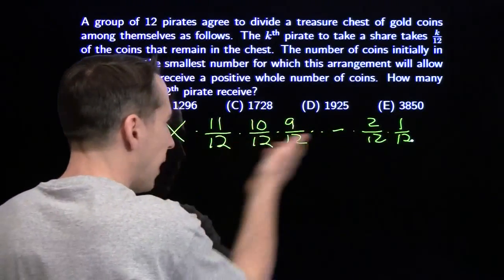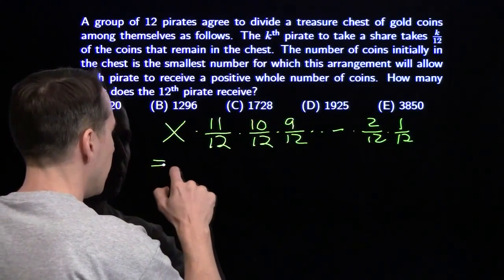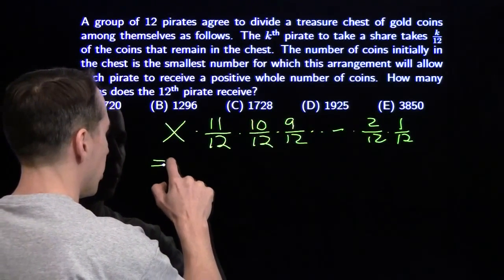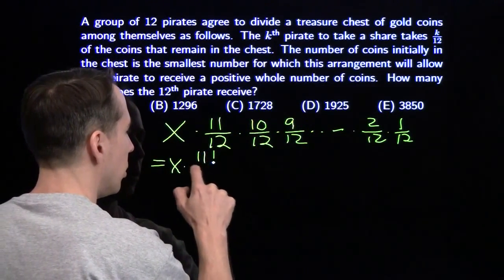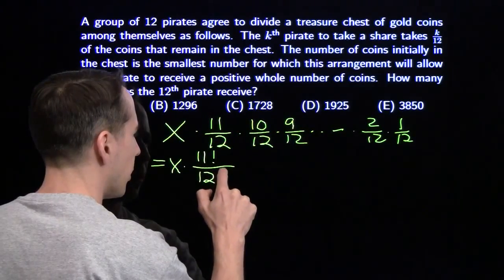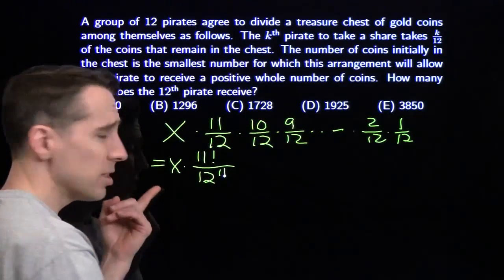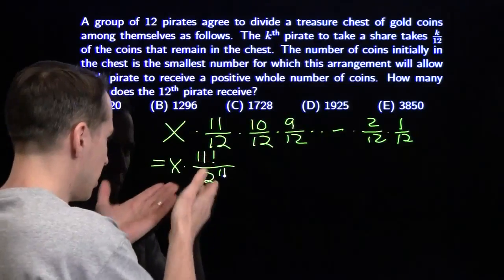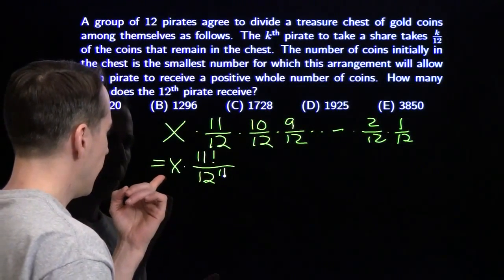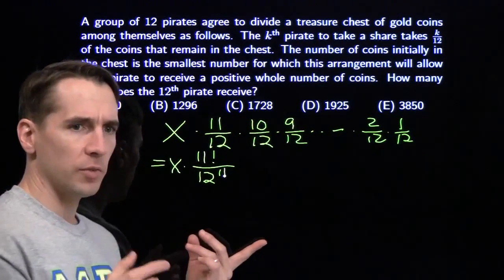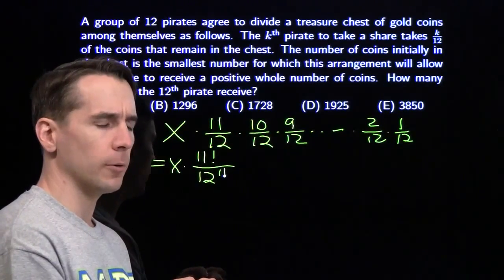We want to figure out the value of this expression. We can write it more compactly as x times 11 factorial over 12 to the 11th. X is the smallest value that makes this an integer — more precisely, the smallest value that ensures each pirate gets an integer number of coins.